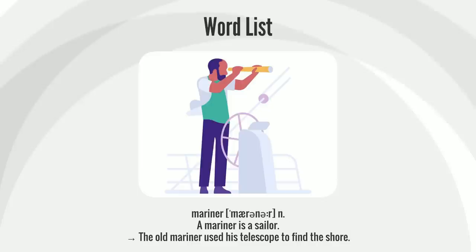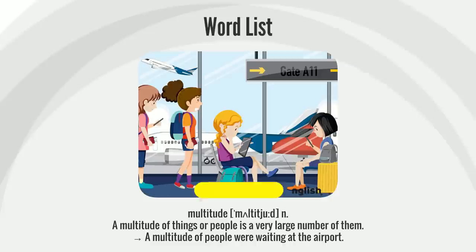A mariner is a sailor. The old mariner used his telescope to find the shore.